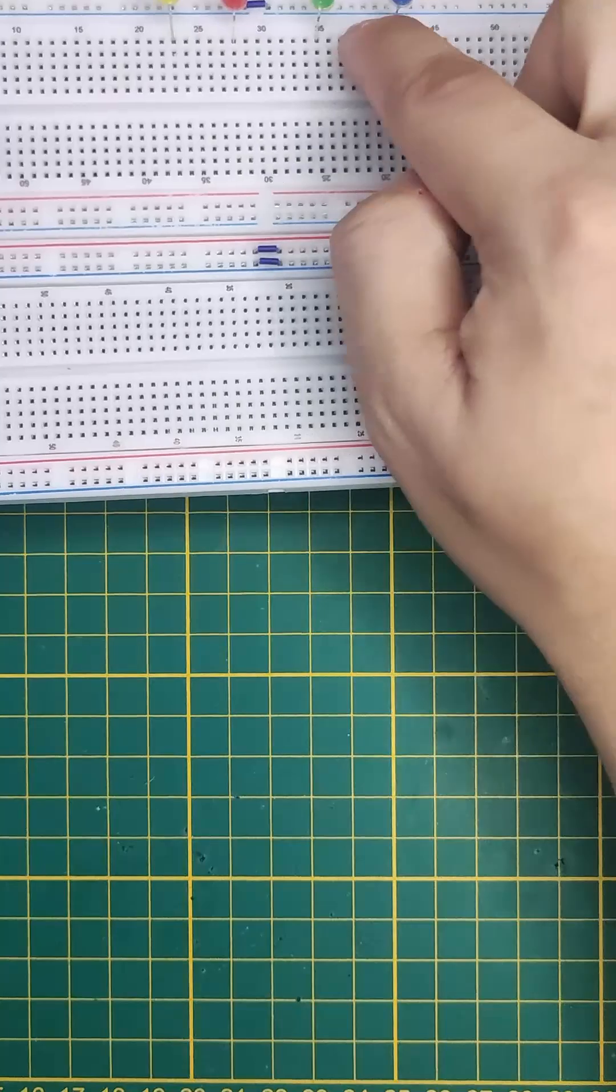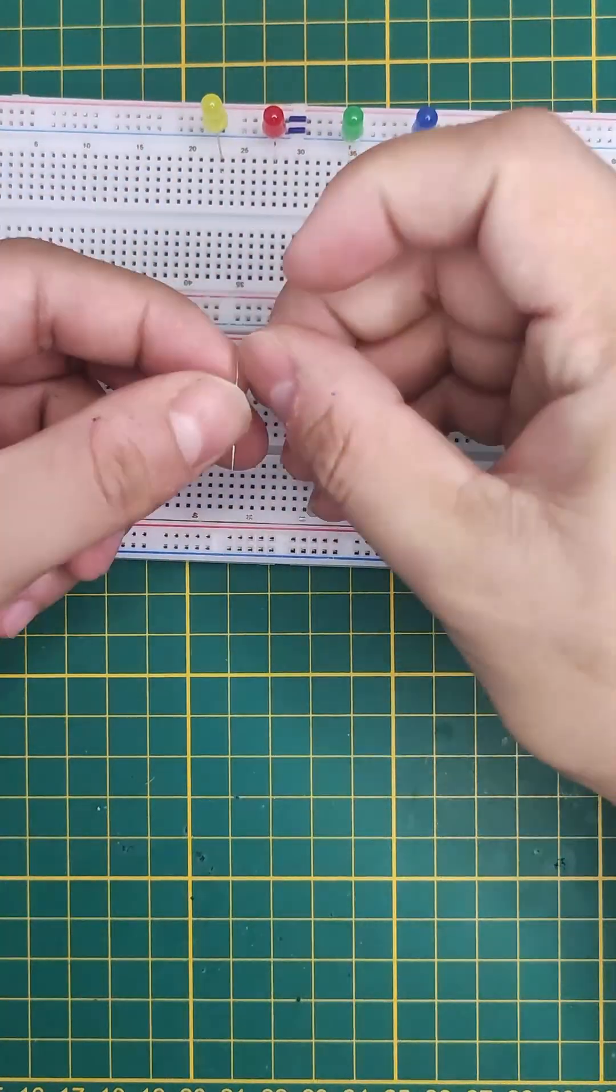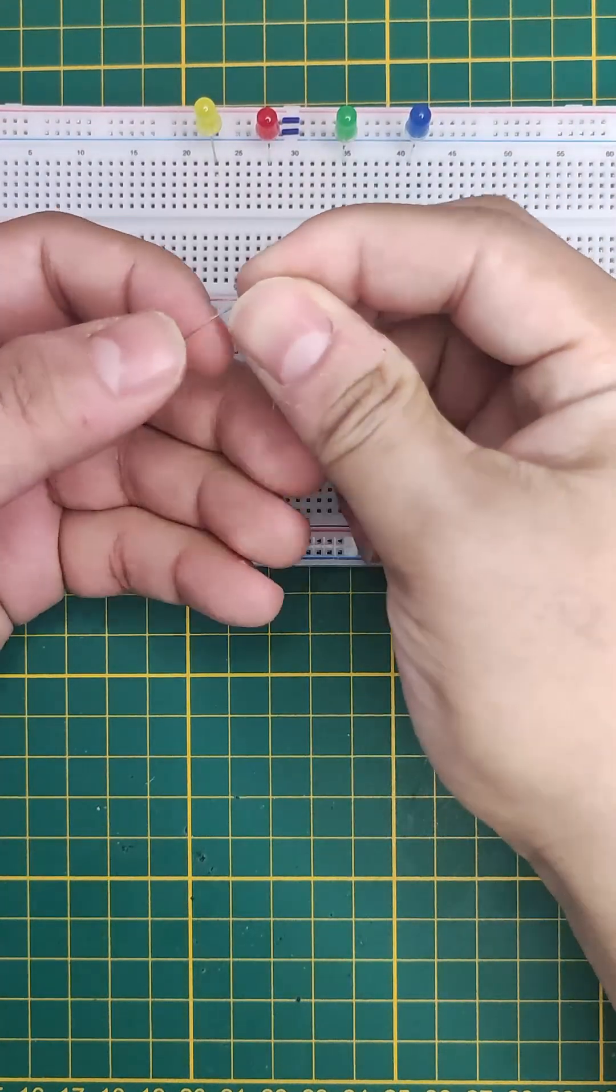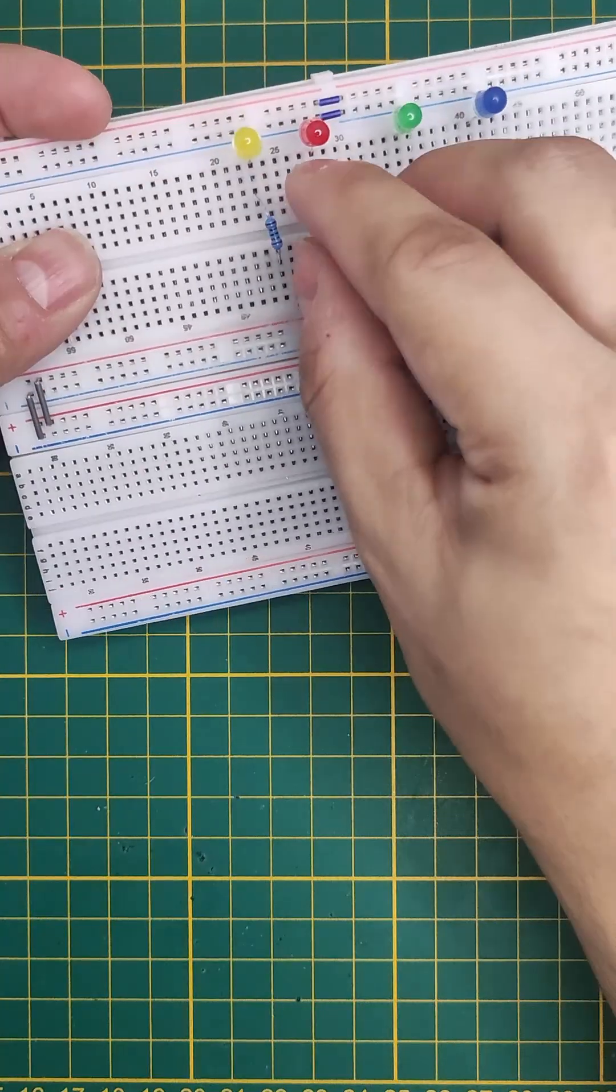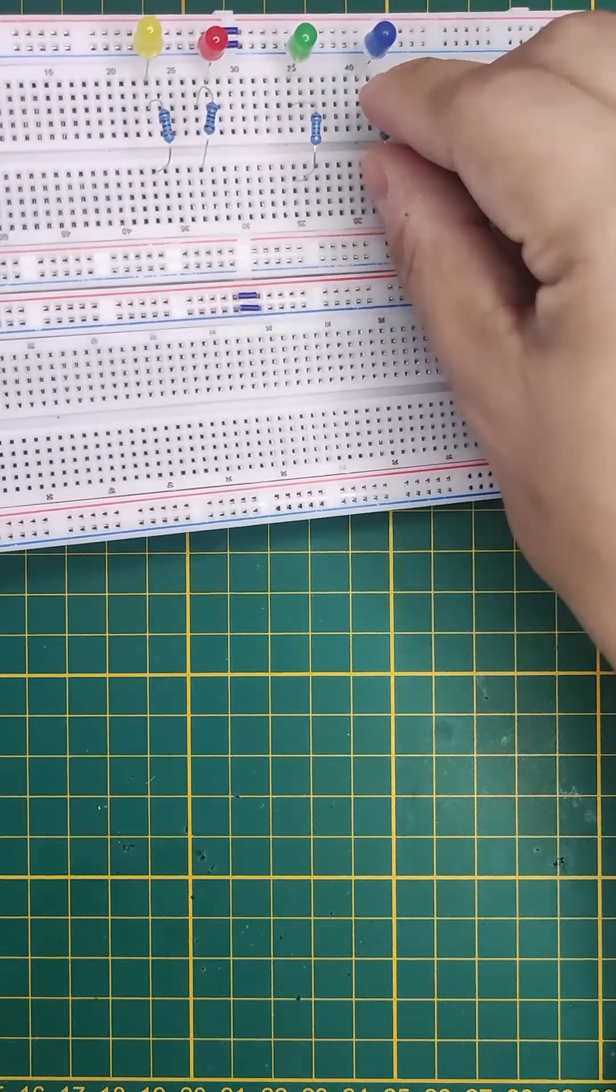Now these are all the positive terminals, and now we need to connect the resistors. Just make sure that these terminals are all the way to the end.